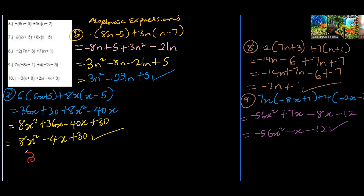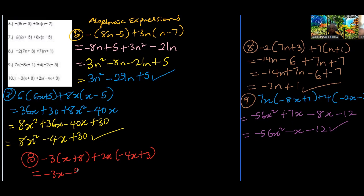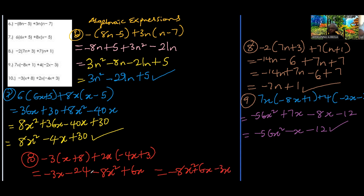Number 10, the final question: negative 3 into x plus 8, plus 2x into negative 4x plus 3. So negative 3 times x is negative 3x, and negative 3 times 8 is negative 24. Then 2x times negative 4x is negative 8x squared, and 2x times 3 is positive 6x. Collecting like terms: 6x minus 3x is 3x. The answer is negative 8x squared plus 3x minus 24.